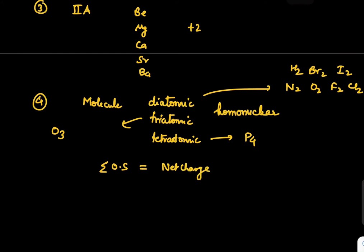If you apply this rule, which is rule number five, net charge is zero. For H2, there are two members of hydrogen. If both are x, then x + x = 0, so x will come out zero.